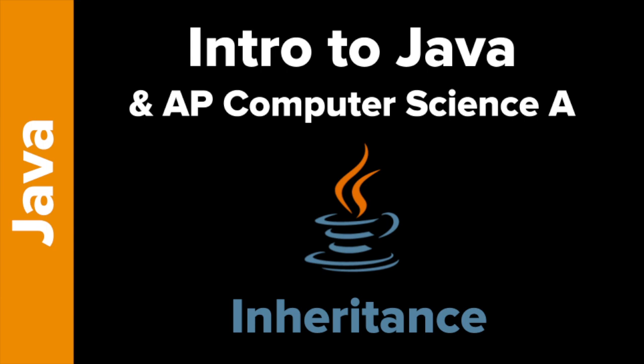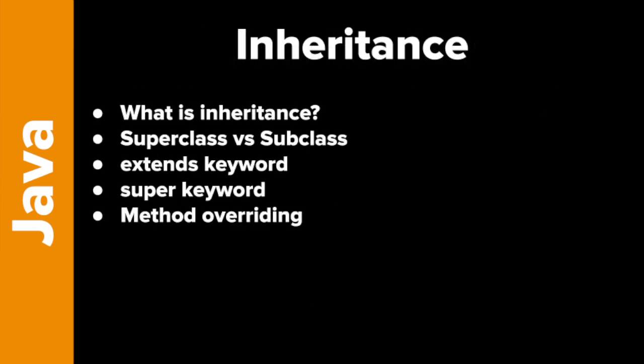So what we're going to learn about is: first, what is inheritance? We're talking about the idea of a superclass versus a subclass. We're going to learn about the extends keyword and the super keyword, which are very important. And we'll learn a little bit more about method overriding, which is very similar to method overloading.